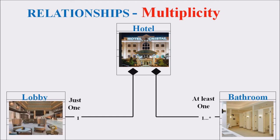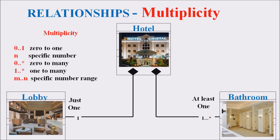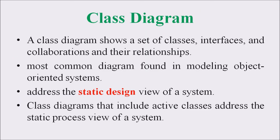A hotel has one lobby and one to many bathrooms. The different multiplicity values associated with classes range from 0 to 1, a specific number, 0 to many, 1 to many, or between two different number ranges.